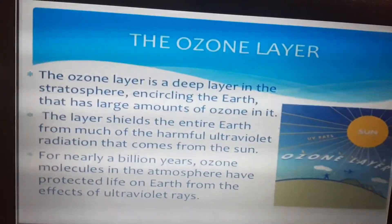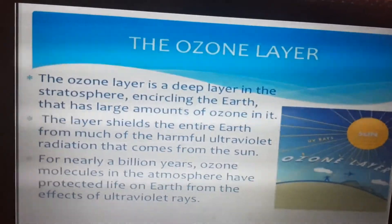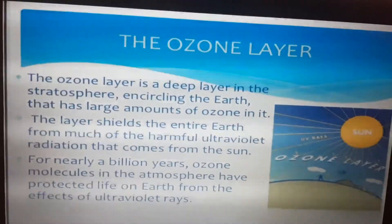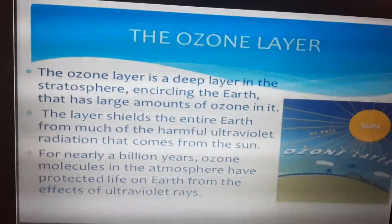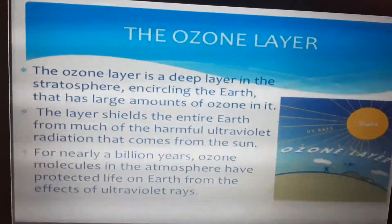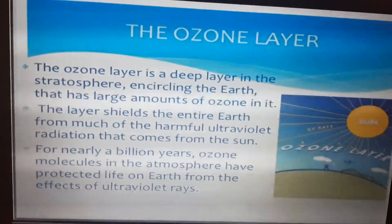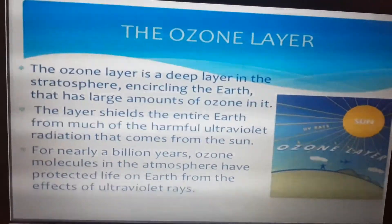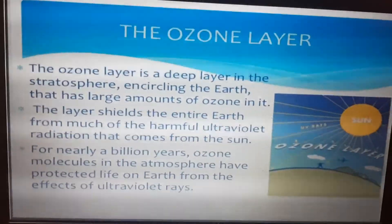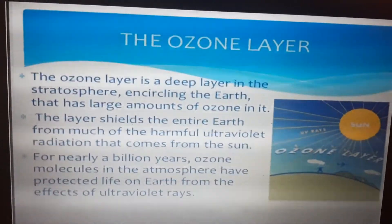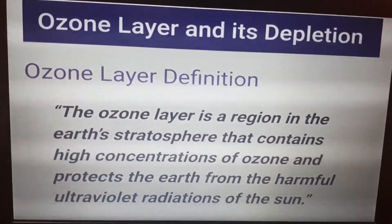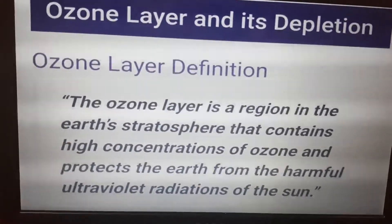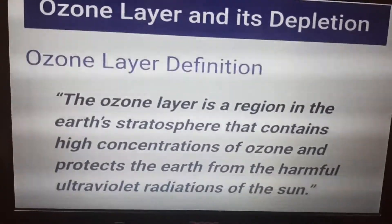The ozone layer is present in the stratosphere, where a high concentration of ozone is found. This layer acts as a shield for the Earth, protecting us from harmful UV radiation coming from the sun. Billions of years ago, ozone molecules present in the atmosphere began protecting Earth from harmful UV rays.